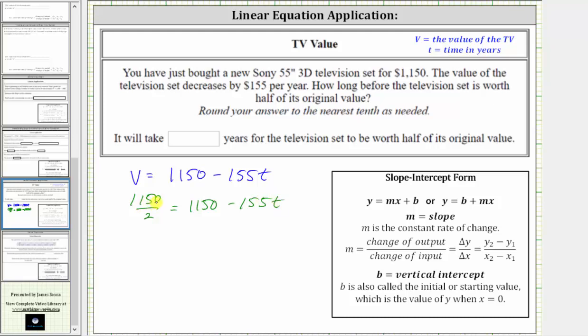1,150 divided by two is equal to 575. So we have 575 equals 1,150 minus 155T. And now to solve for T, we need to isolate the T term. So for the next step, let's subtract 1,150 on both sides.